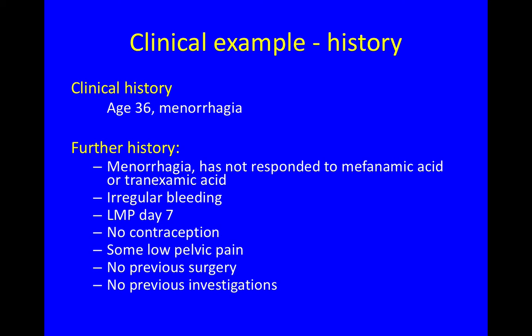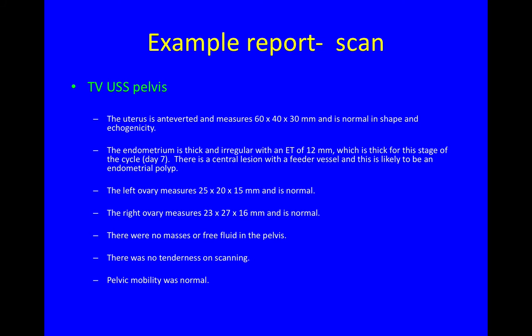The history we had in our patient at the beginning was she was 36 and had heavy periods. When you asked her more questions, she had heavy periods which did not respond to mefenamic acid or tranexamic acid. The bleeding is irregular. She started bleeding seven days ago, does not use contraception, has had some low pelvic pain, but no previous surgery and no previous investigations. On our scan, we saw that the uterus looked normal, and the endometrium had a thickness of 12 millimetres — but that's not normal for somebody on day seven of their cycle.